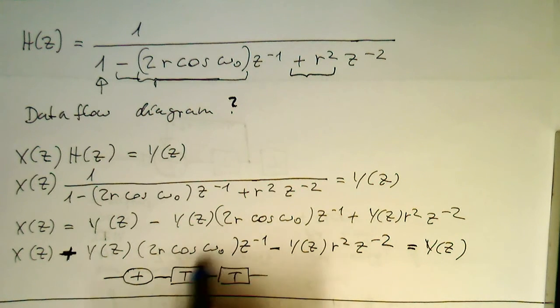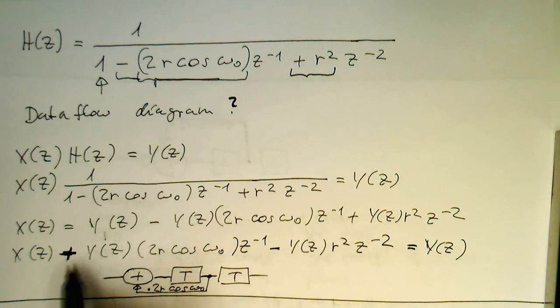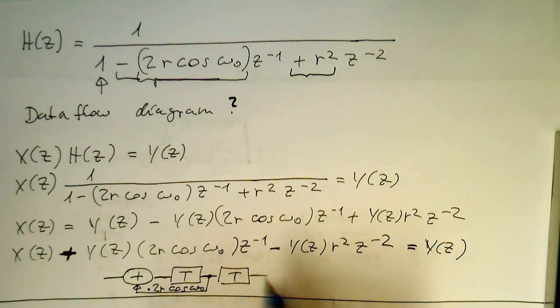So now what we need to do is we need to, the first delayed one here, we multiply this with 2r cosine omega 0, and feed this back. So like this, and we multiply this here by 2r cosine omega 0, and so we see the sign is inverted.